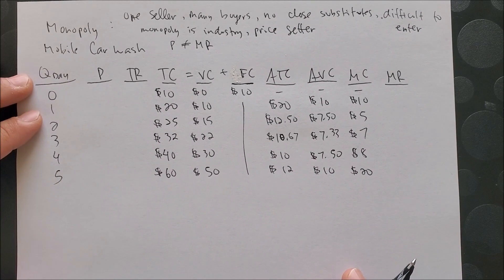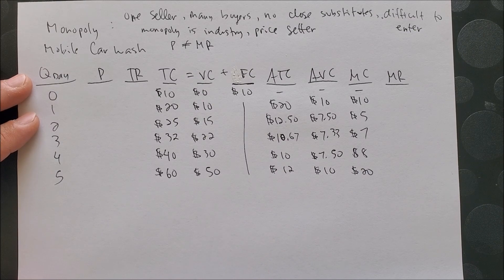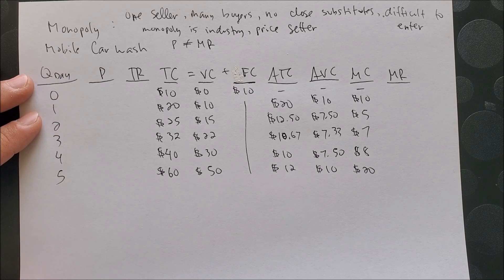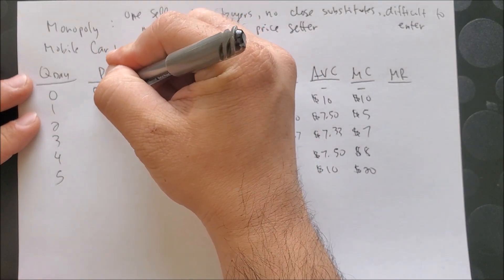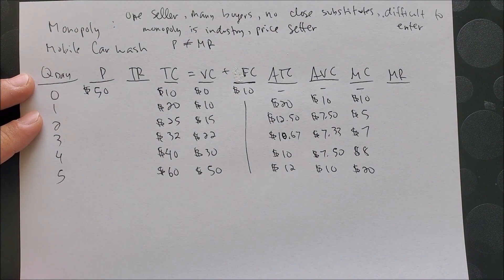So knowing that we have our information, I'm using the same numbers we've used before in our mobile car wash. But now, since this is a monopoly market, they are the entire industry. I'm going to put here the following: $50 to wash one vehicle.